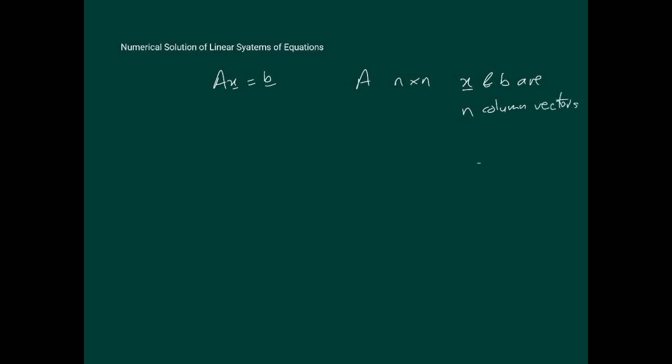So for the sake of the next several videos on this topic, we will be assuming that A is an n by n matrix, and of course x and b are n column vectors.